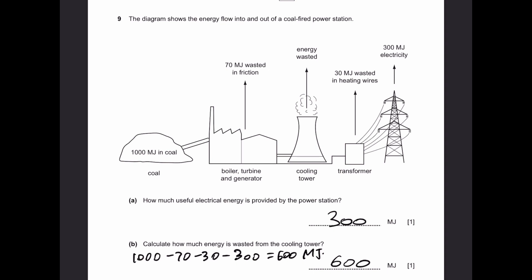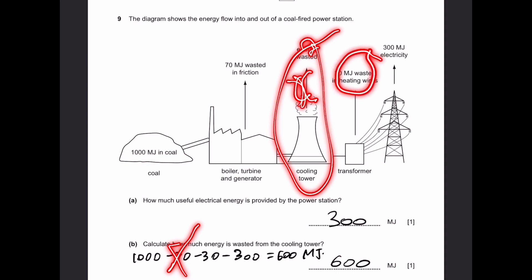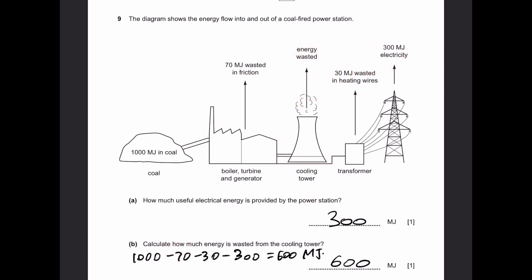Part B. Calculate how much energy is wasted from the cooling tower. Out of 1000 megajoules of coal, 70 is wasted in friction, and the cooling tower wastes X, 30 megajoules is wasted heating wires, and 300 megajoules is used for electricity. So X will be 1000 minus 70 minus 30 minus 300 equals 600 megajoules.